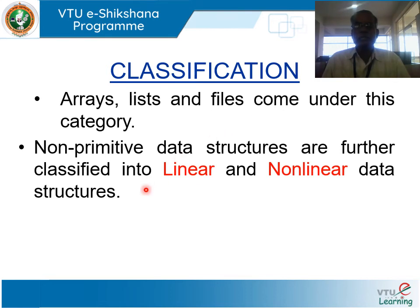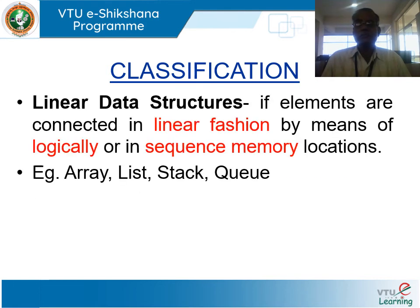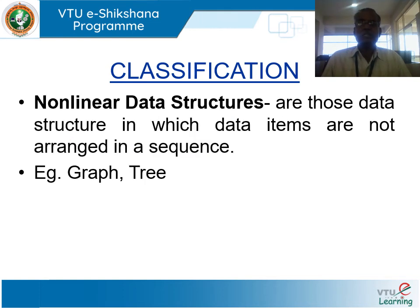Non-primitive data structures are further classified into linear and non-linear. Linear data structures have elements connected in a linear fashion, logically or in sequential memory locations — examples are arrays, lists, stacks, and queues. Non-linear data structures are those in which data items are not arranged in a sequence — examples are graphs and trees.